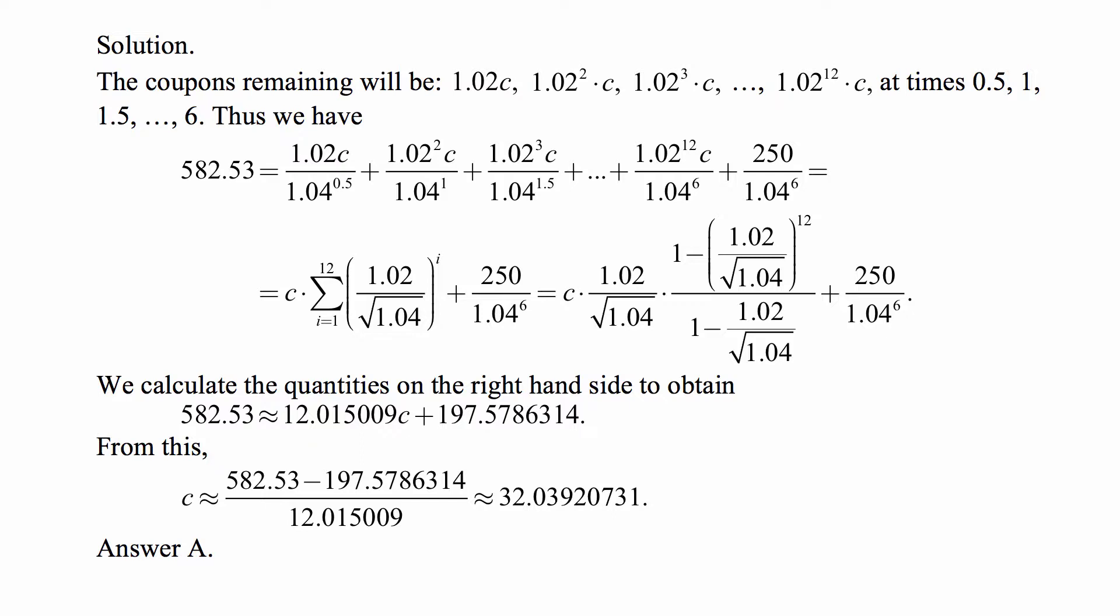The present value, without the coupon that was just paid, is just the future coupons and the principal repayment at time 6 of $250.